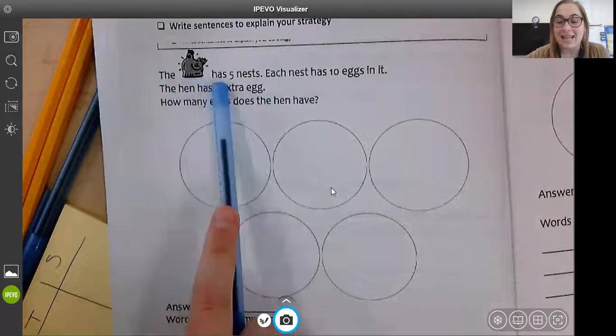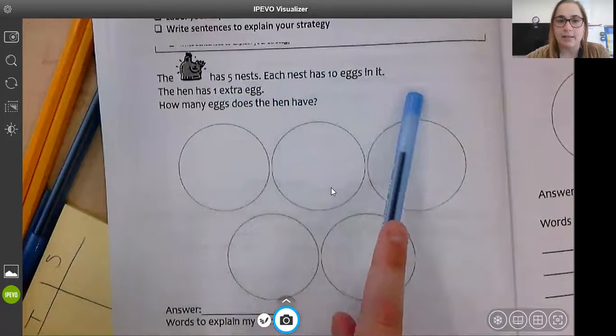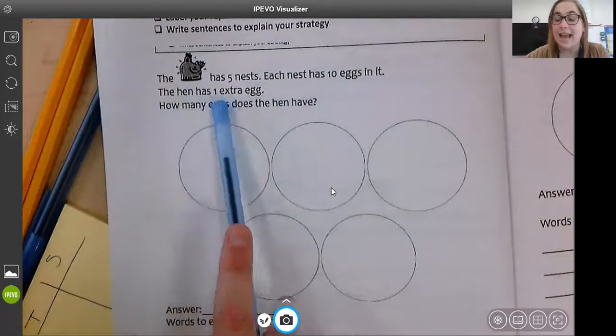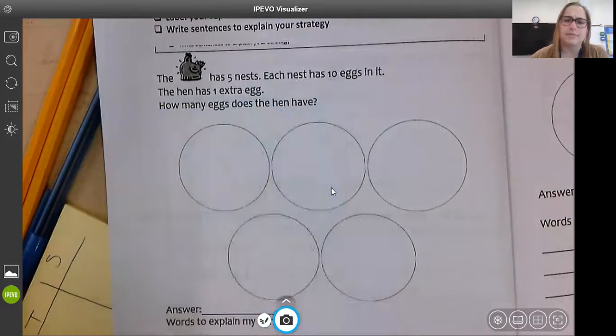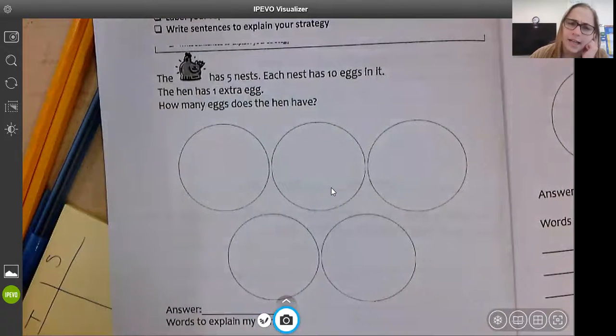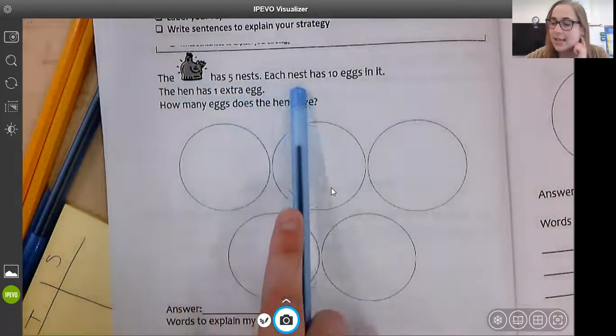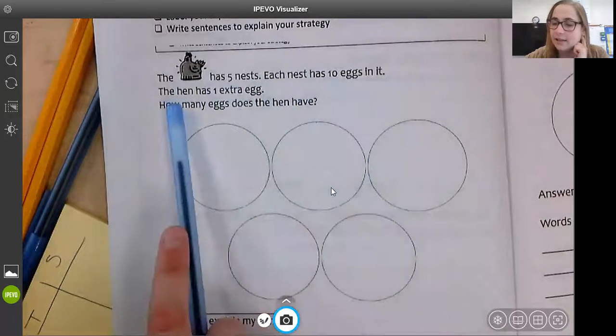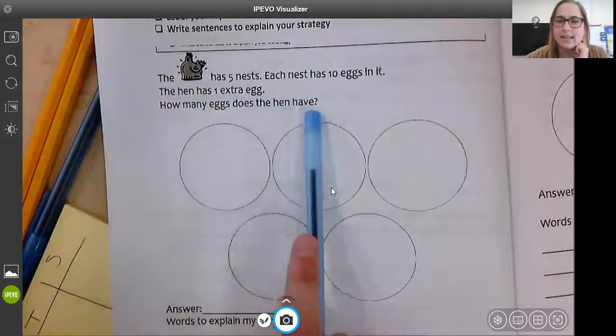The chicken has five nests. Each nest has 10 eggs in it. The hen has one extra egg. How many eggs does the hen have? I'll read it again. Picture the story in your mind. The hen has five nests. Each nest has 10 eggs in it. The hen has one extra egg. How many eggs does the hen have?